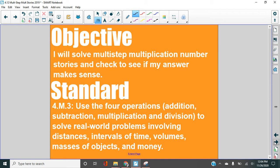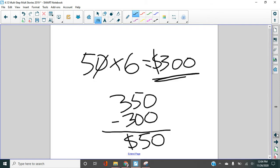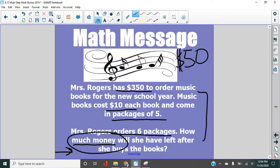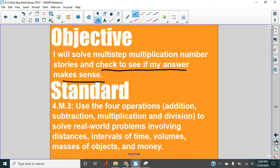Our objective here, we are solving multiple step multiplication number stories, and we will check to see if our answer makes sense. Okay. So let's do that here, right? We got an answer of $50. And if she had $350 to start, the music is going to be fairly expensive. And it's an answer that does make sense that she would have $50 remaining. It fits the question.